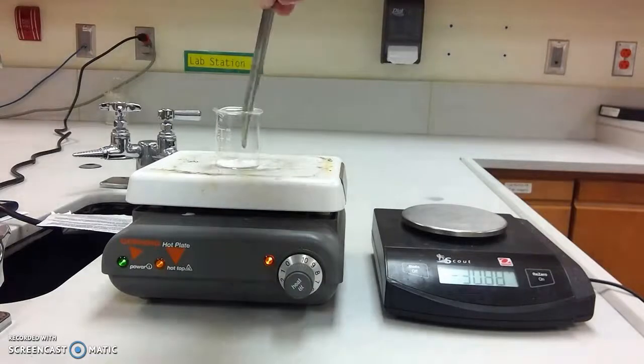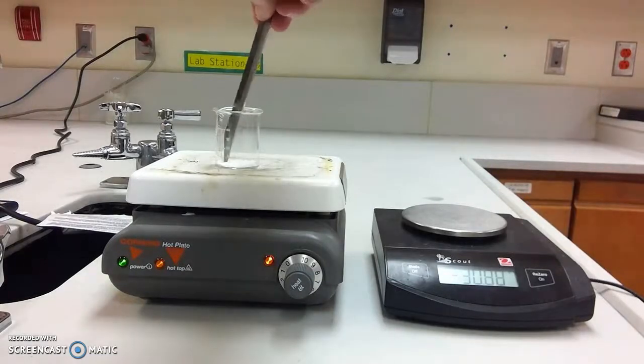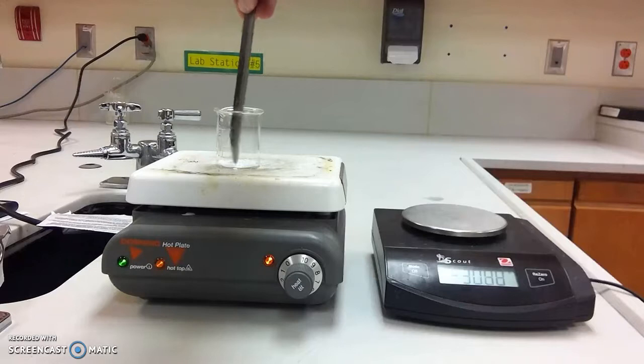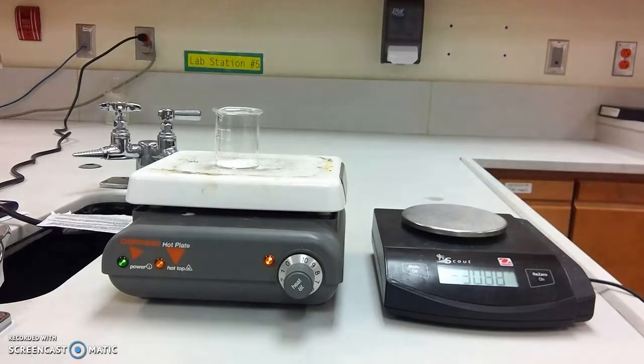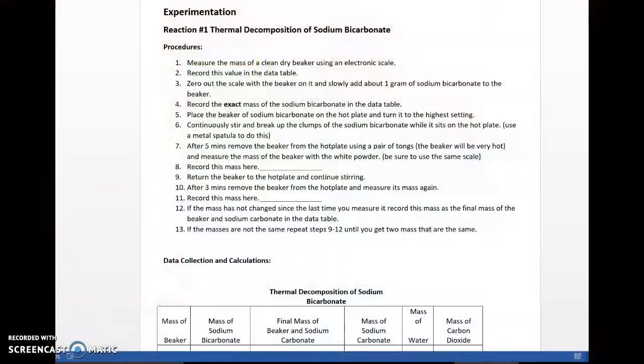Okay, now it's on the beaker. We're using a metal spatula, keep it stirring, keep it moving, break up the clumps, and as it heats up, it's going to begin going through that chemical reaction. We'll go ahead and speed up time real quick here.